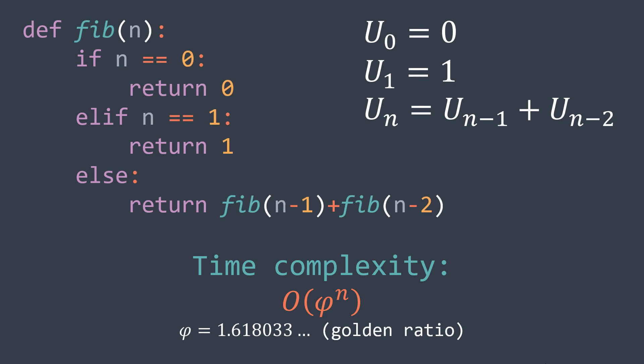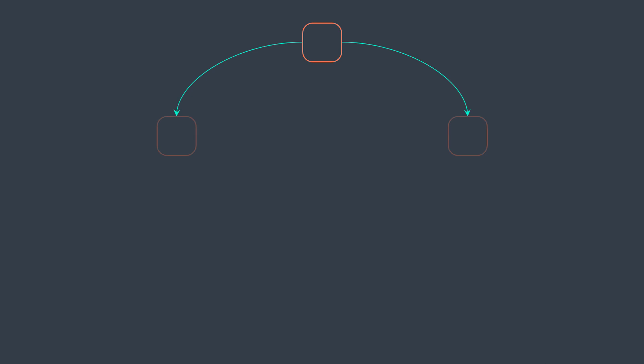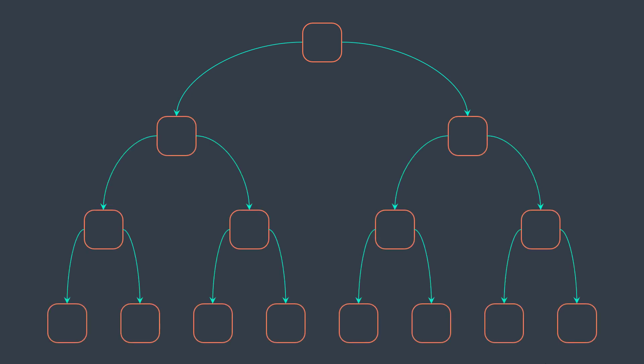Let's see how we can optimize it by using dynamic programming. Dynamic programming says that we can optimize a recursive function by storing the results of already computed subproblems so that we don't have to recompute them later. This means that when we solve a problem by dividing it into smaller subproblems, it's possible that we solve the same subproblem many times uselessly.